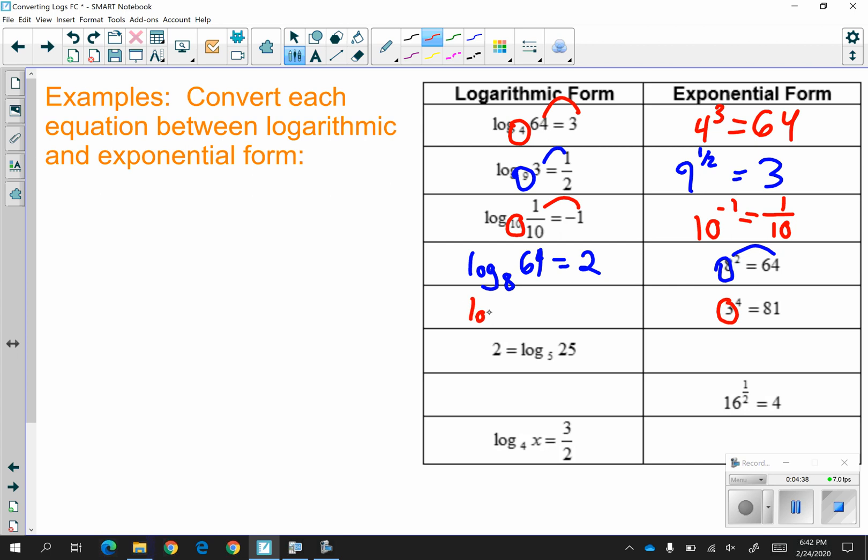Your base is 3. And you switch the other two values. 81 goes to the left. 4 goes to the right.